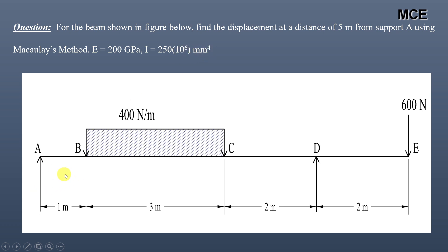This is an overhanging beam of total span 8 meters. Two types of loading are applied: a UDL of 400 N/m over a length of 3 meters, and a concentrated load of 600 N applied at the free end. We have to find the displacement at a distance of 5 meters from support A.